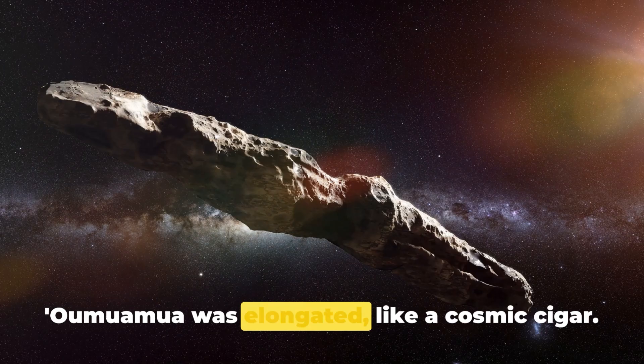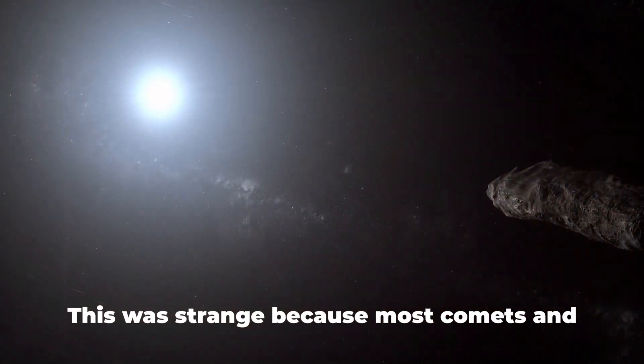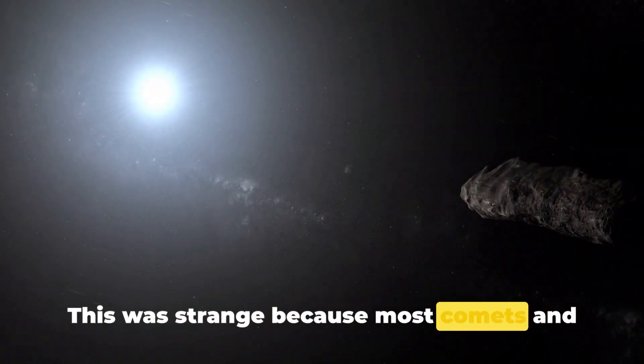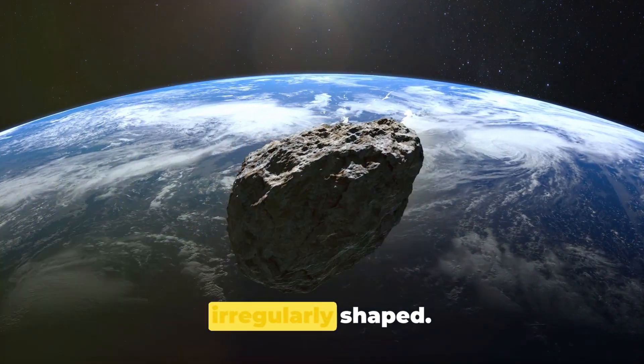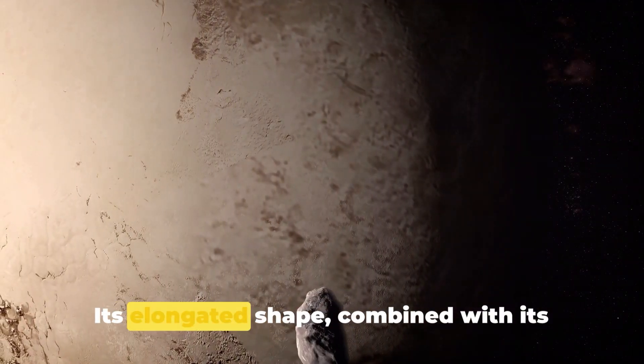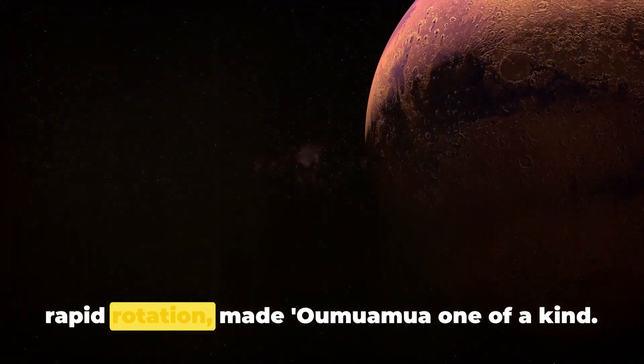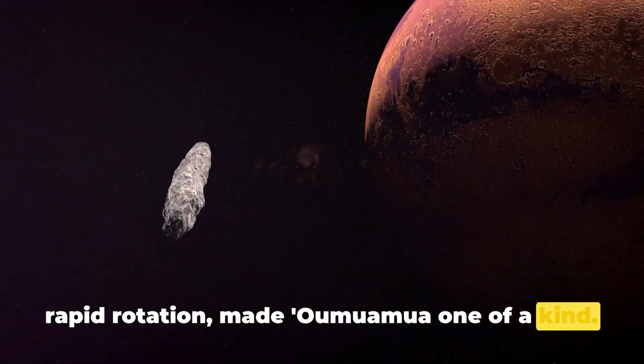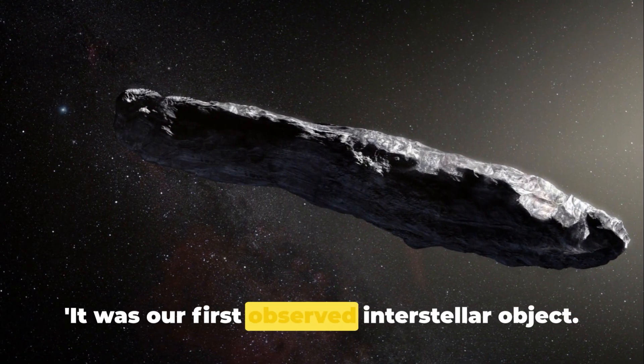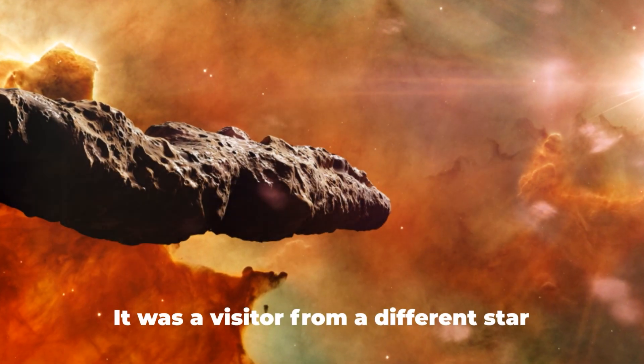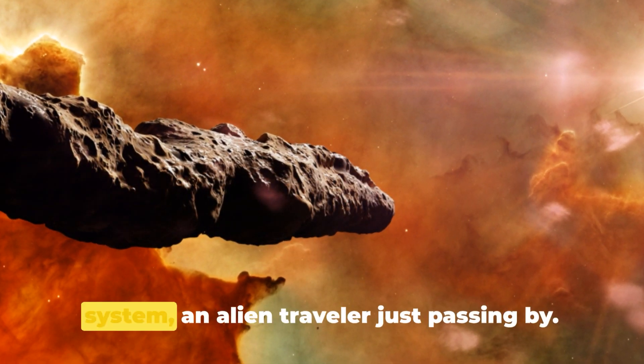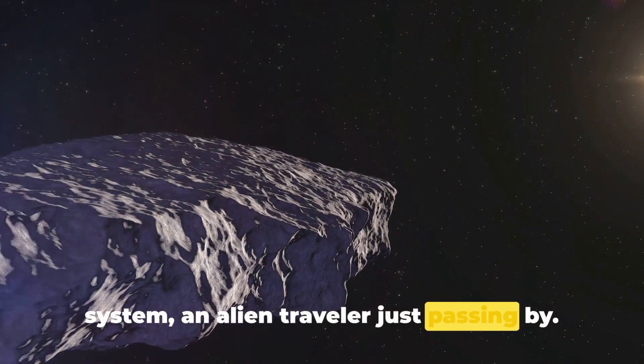Oumuamua was elongated, like a cosmic cigar. This was strange because most comets and asteroids in our solar system are round or irregularly shaped. Its elongated shape, combined with its rapid rotation, made Oumuamua one of a kind. It was our first observed interstellar object, a visitor from a different star system, an alien traveler just passing by.